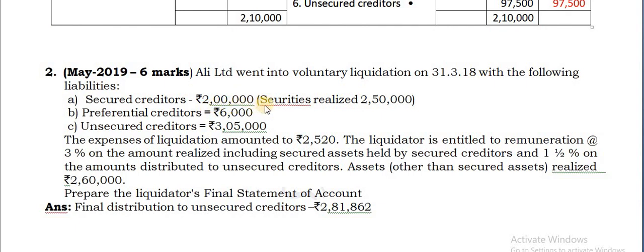Secured creditors is given 2 lakhs; secured assets realized is 2,50,000, so more amount is being realized here. There are preferential creditors of 6,000, unsecured creditors of 3,05,000, and liquidation expenses given as 2,520.